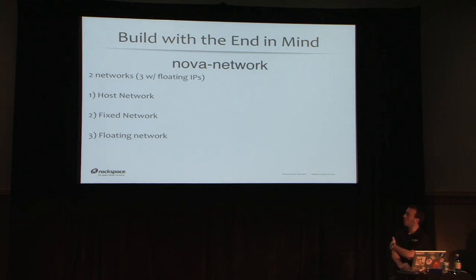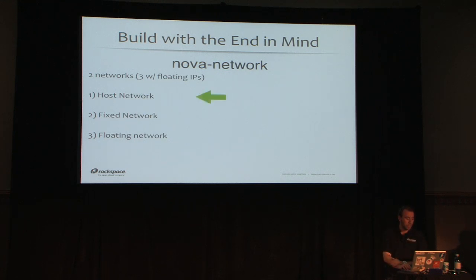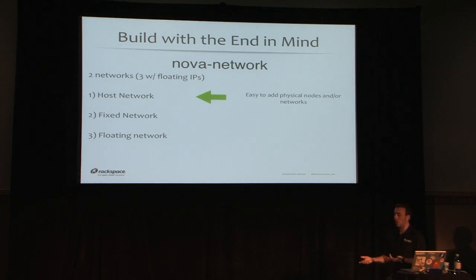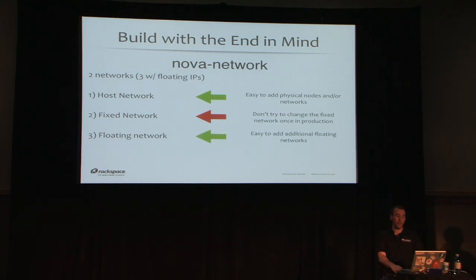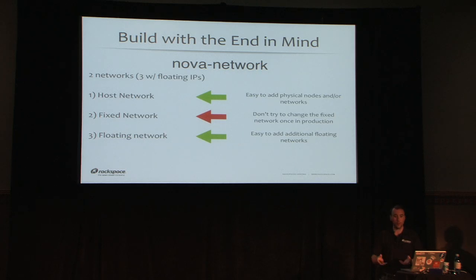There are two — or three if you use floating IPs — networks in play. The host network is easy to deal with; adding hosts or growing that network is not too hard. The fixed network is the critical piece — you really don't want to try to change this once you're in production, as that would not be a fun experience. Floating IPs are extremely easy to add using pools, and if you need more you can create additional pools that become available to your users.